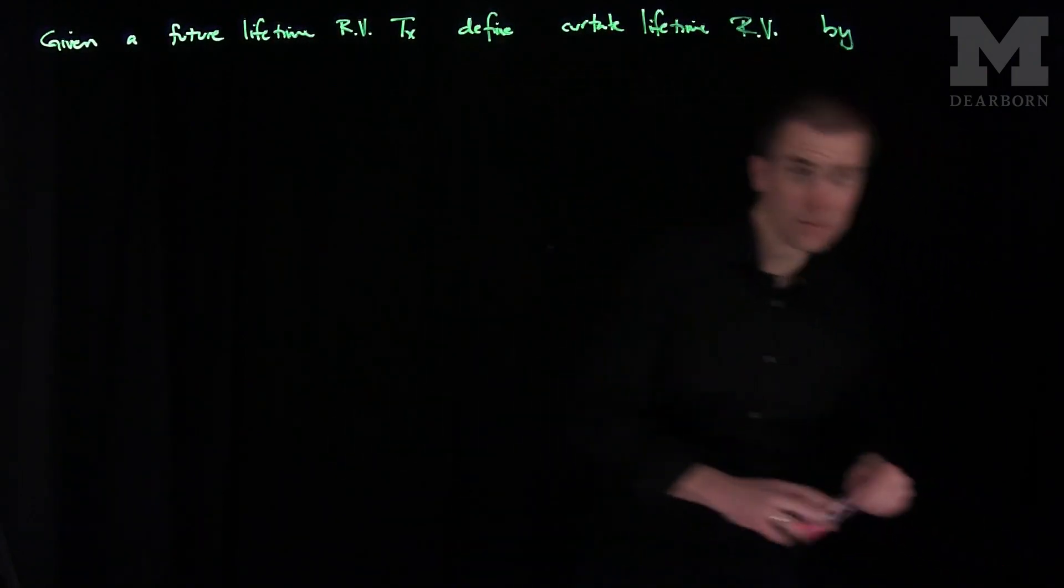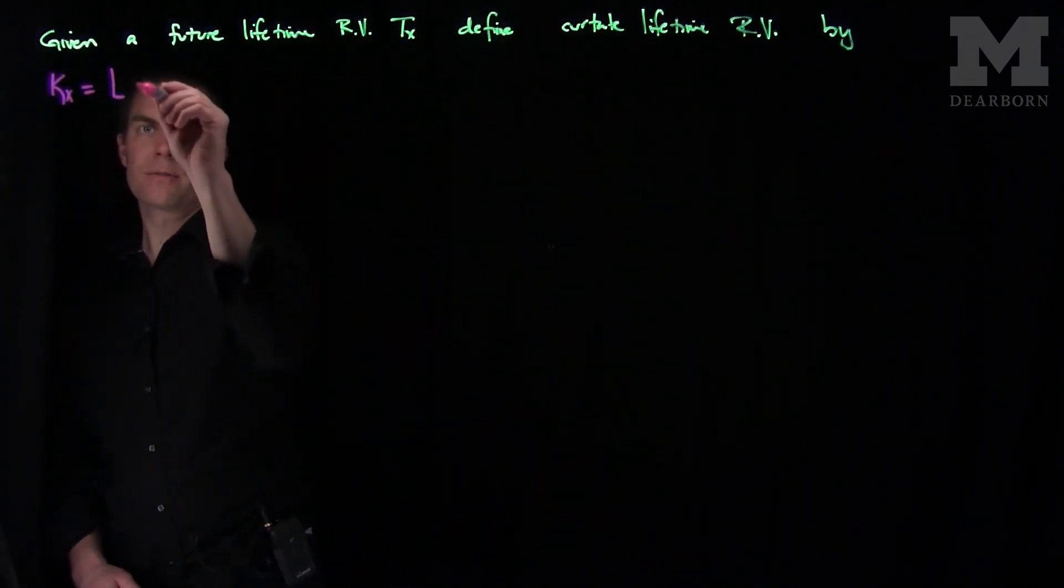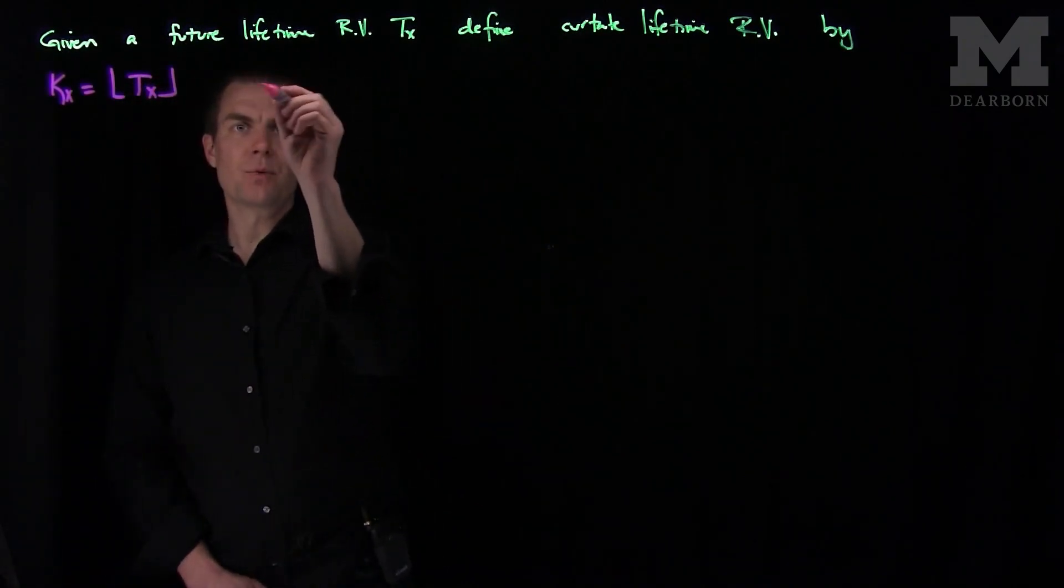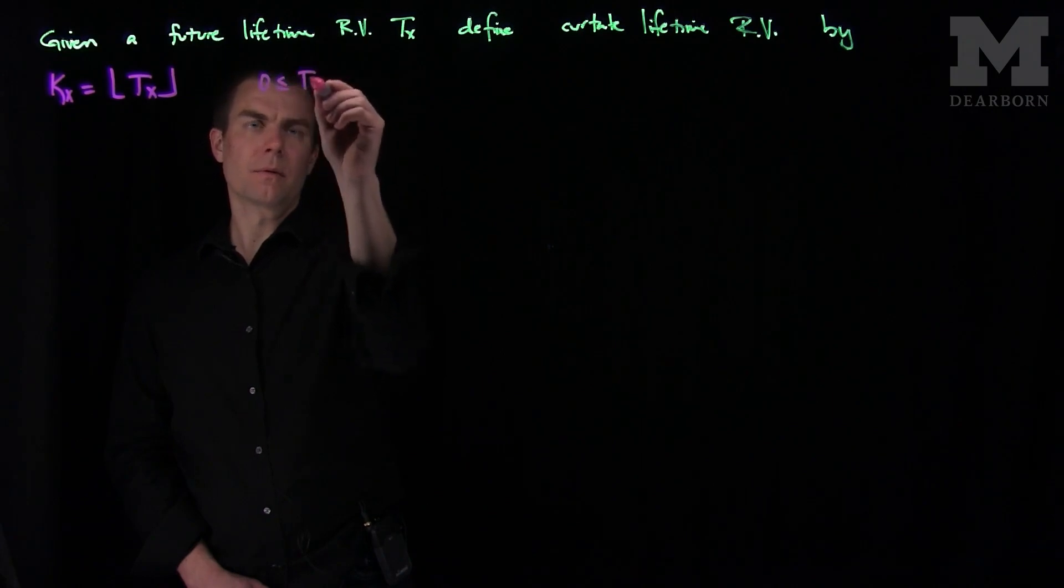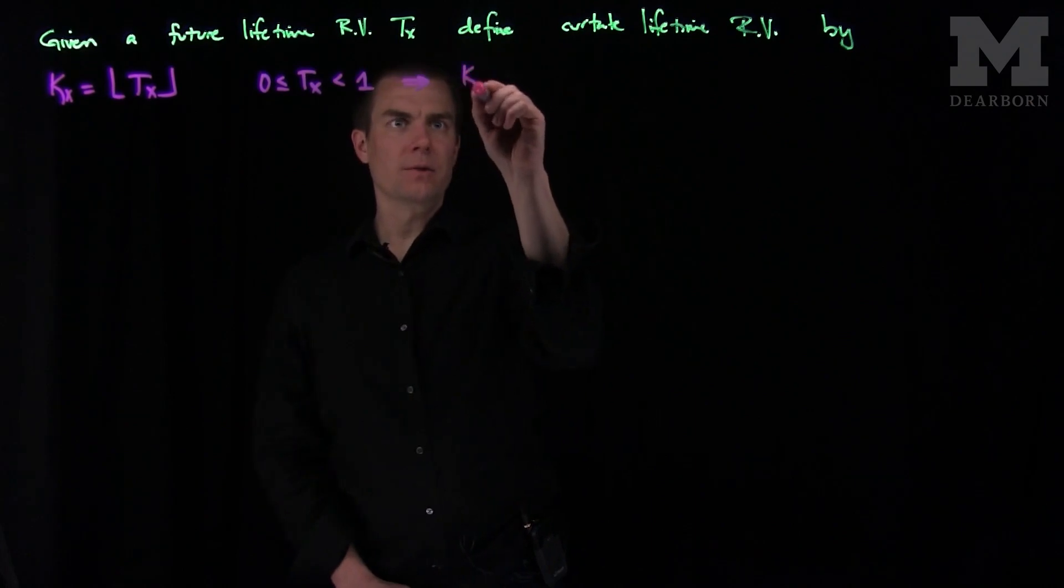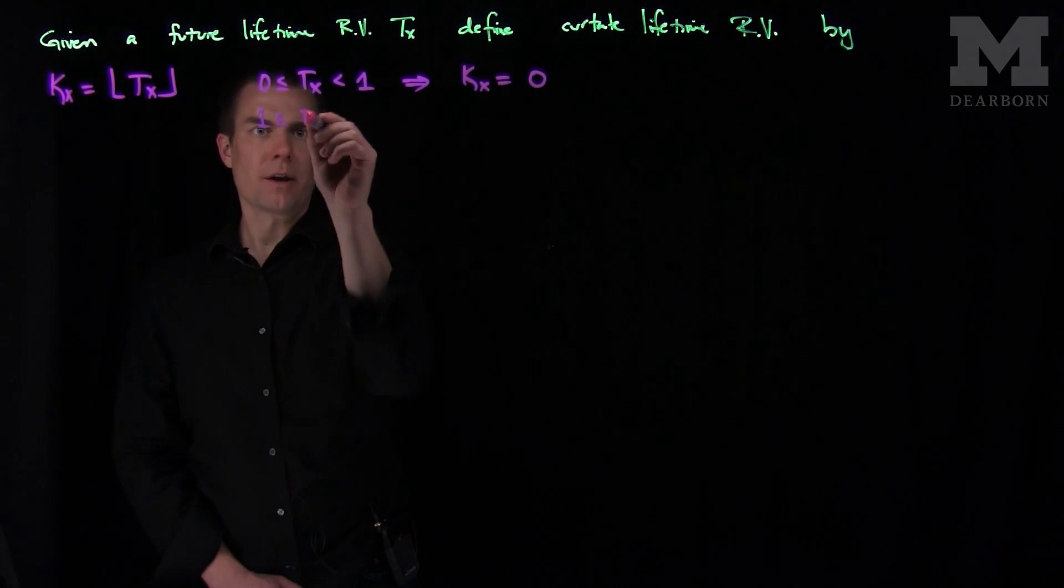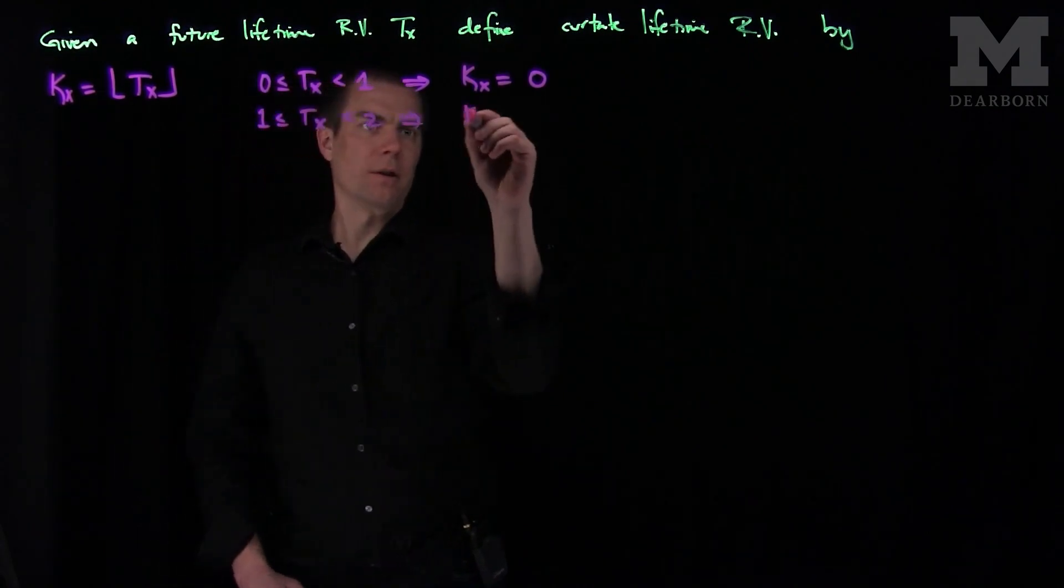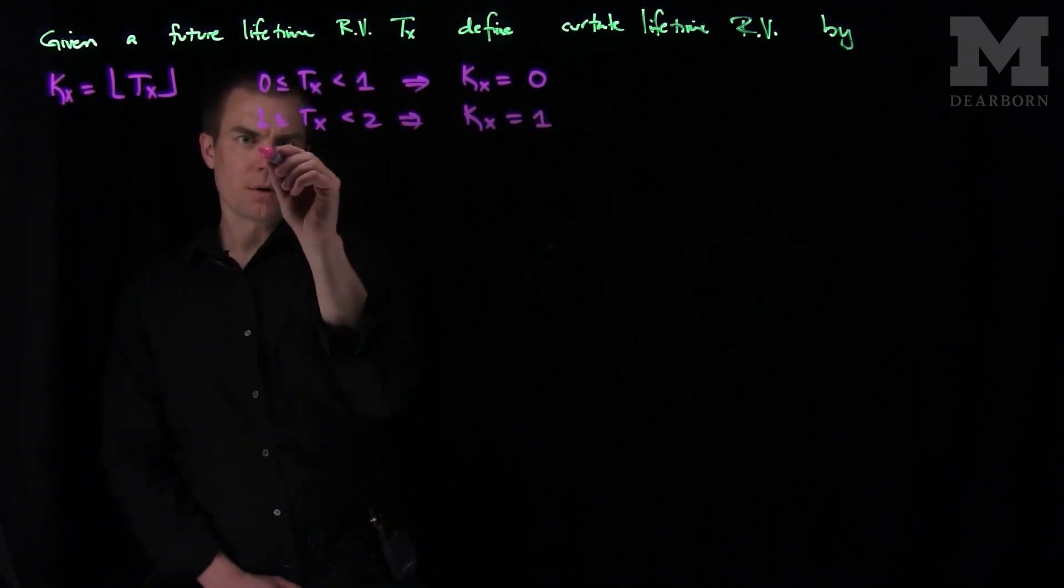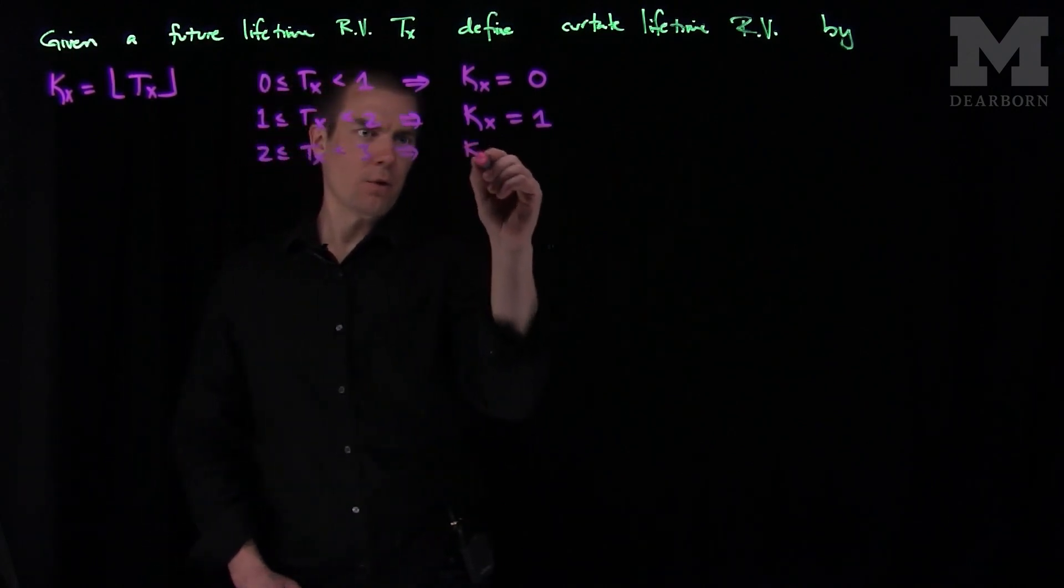We'll define k sub x as the integer floor of Tx. So if Tx is between 0 and 1, the curtate will be identically equal to 0. If T is between 1 and 2, then the curtate function kx will be equal to 1. One more example: if we're between 2 and 3, then the curtate function will be equal to 2.